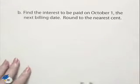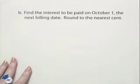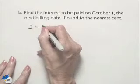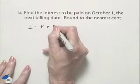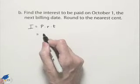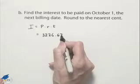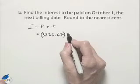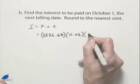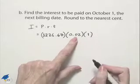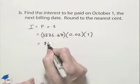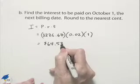Now let's find the interest to be paid on October 1st, the next billing date, rounded to the nearest cent. We use the formula: interest equals principal times rate times time. The principal is the average daily balance of $3,226.67. We multiply that by the interest rate of 2%, which is a rate per month, and the time is one month. This gives us interest of $64.53.